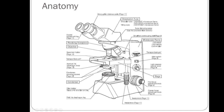The lowest power objective lens is called the scanning lens. The next higher power is the low power lens, then the high power lens, and the highest power is the oil immersion lens. The oil immersion lens can only be used with immersion oil placed on the microscope slide.